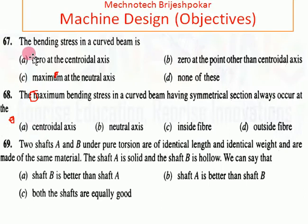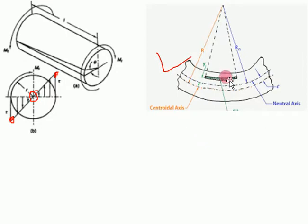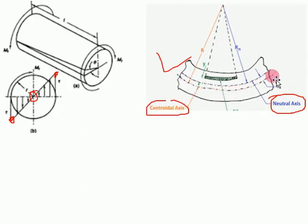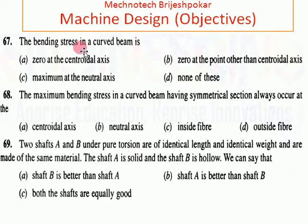Question 67: the bending stress in a curved beam — the answer is B. Bending stress is zero at a point other than the centroidal axis. The natural axis and centroidal axis differ in a curved beam: the bending stress is maximum at the centroidal axis and zero elsewhere.